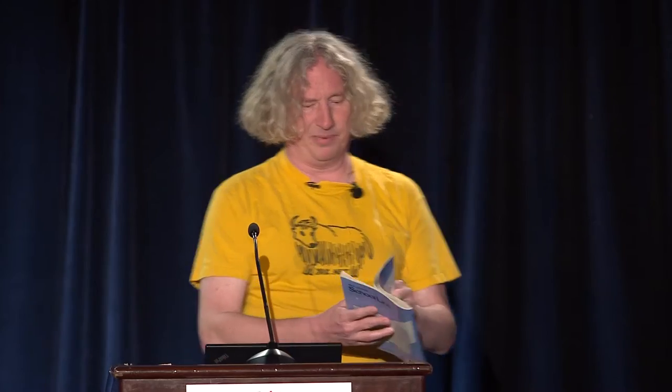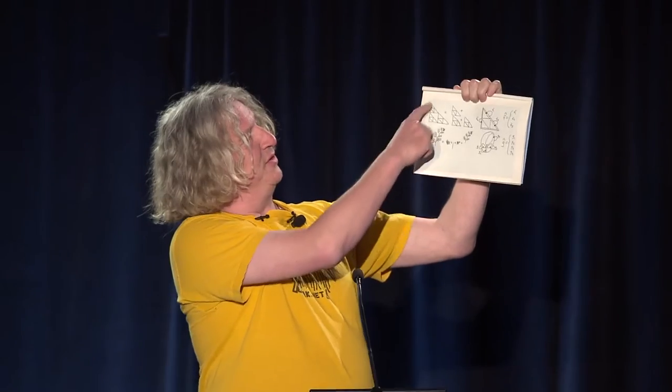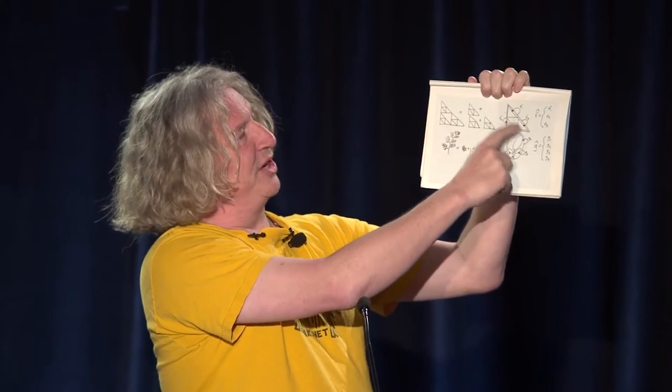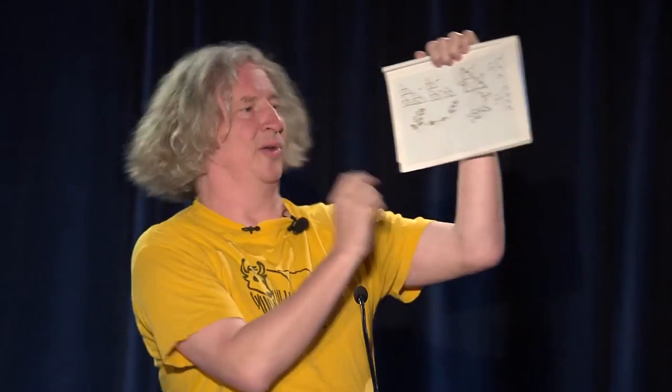I would show you what an iterated function system is and Barnsley's collage theorem. The collage theorem says that if you know how to tile a picture with shrunken copies of itself, like Sierpinski's gasket can be made out of three little pieces of itself, the functions that map you from the whole to each of those parts are the member functions of the iterated function system. And the fern here is made out of four copies of itself. There's the lower left branch, the lower right branch, there's the stem which you can make if you just shrink the whole thing into width zero, and then there's all the remaining part of the fern. And so you can figure out on paper, and I did, what the four functions are to do that.